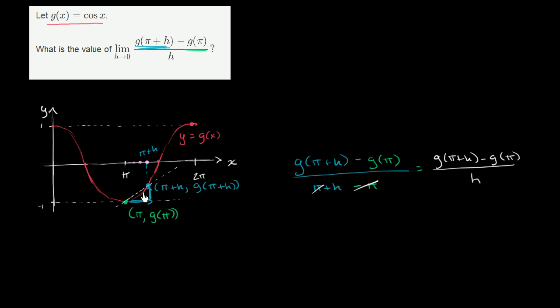But what is going to happen as h becomes smaller and smaller and smaller? Well, g(π + h), or the point π + h, g(π + h), is going to get closer and closer to this point. And the slope of those secant lines is going to start getting closer and closer to the slope of the tangent line right at x equals π.